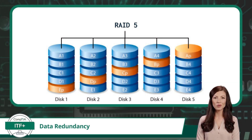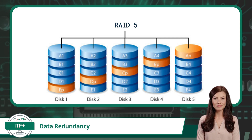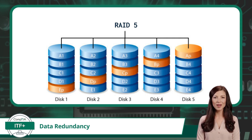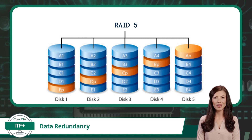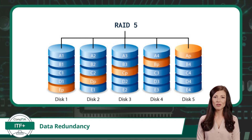Then there is RAID 5, which strikes a balance between RAID 0 and RAID 1. It employs striping, just like RAID 0, but introduces an element called parity. Parity provides a means to reconstruct data if a single disk in the array fails. This RAID level offers a bit of both — performance and redundancy.